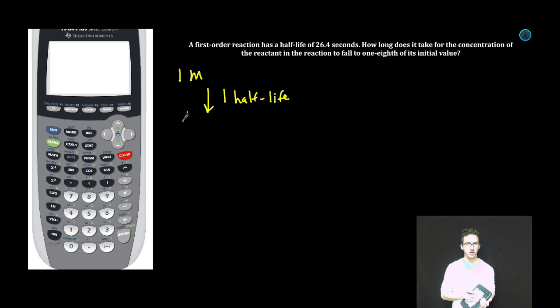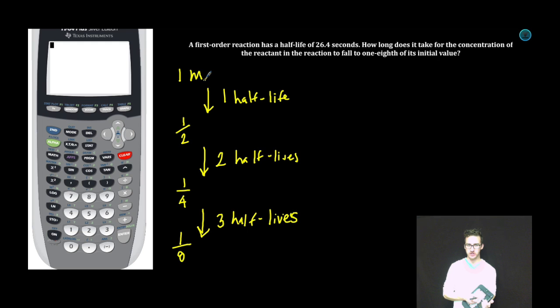Let's imagine that the initial concentration was one molar. After one half-life, our concentration is gonna be cut in half, or 0.5 molar. After two half-lives, our concentration is going to be one-quarter of the original concentration, or half of the half. After three half-lives, our concentration is gonna fall to one-eighth of the original concentration, or half of the one-quarter.